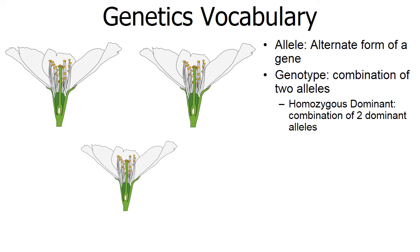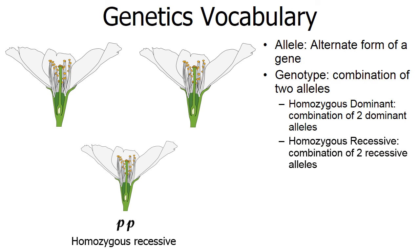What about a white-flowered example? Remember, white is a recessive color, so we use lowercase letters. In this case, the parent on the left passes a recessive allele to the offspring, and the parent on the right also passes a recessive allele. If you inherit two recessive alleles, this combination is called homozygous recessive.